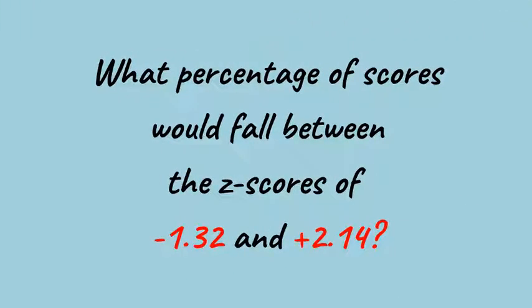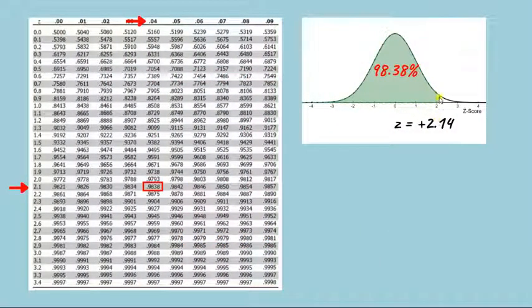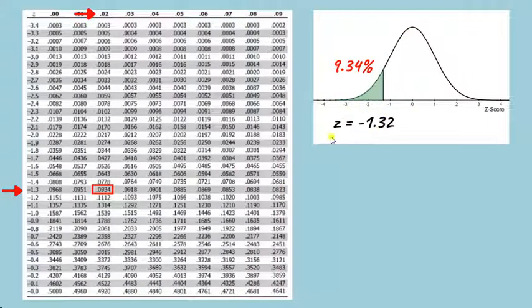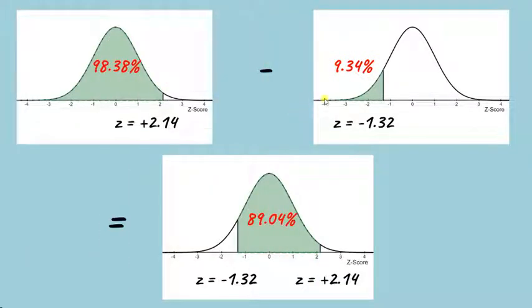For example let's say that we wanted to know how many scores fall between the z-scores of minus 1.32 and positive 2.14. So first we'd find the percentage of scores that fall below positive 2.14 and if we look in the table this would be 0.9838. Next we'd find the scores falling below a z-score of minus 1.32 and this is 0.0934 and if we subtract 0.0934 from 0.9838 we would get 0.8904 and this would mean that 89.04% of scores in a normal distribution will fall between a z-score of minus 1.32 and positive 2.14.